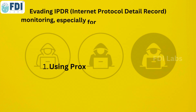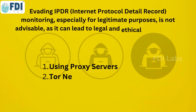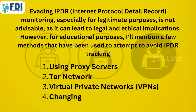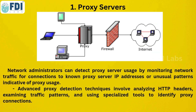Although attempting to evade IPDR monitoring is not a good idea, especially if you are doing it for the wrong reason, let's discuss some strategies people have used. These consist of utilizing virtual private networks, accessing the Tor network, utilizing proxy servers, and altering MAC addresses. While at least we know these methods are fallible, some of them are still able to leave behind hints that tracking systems can detect.